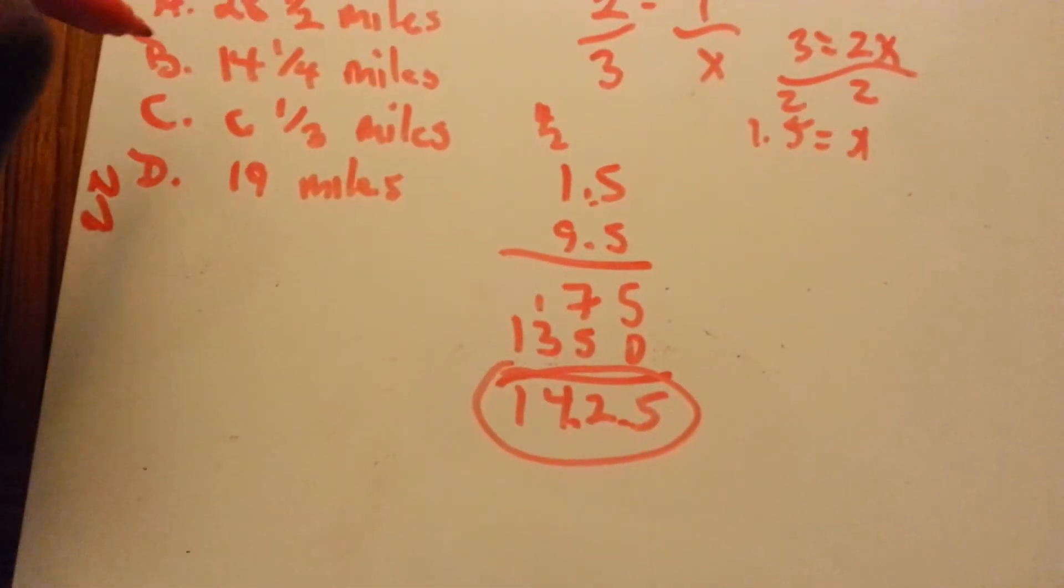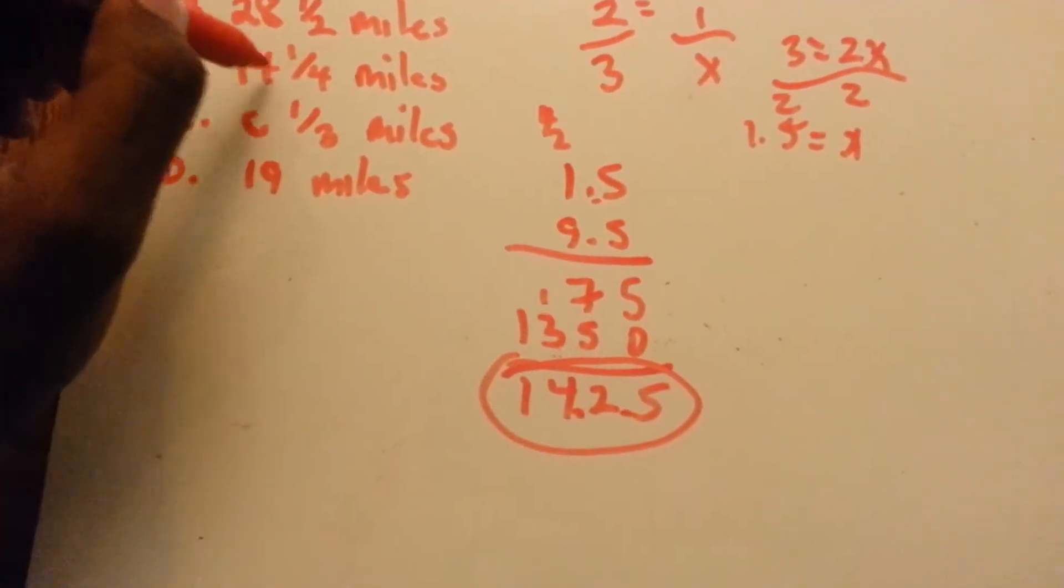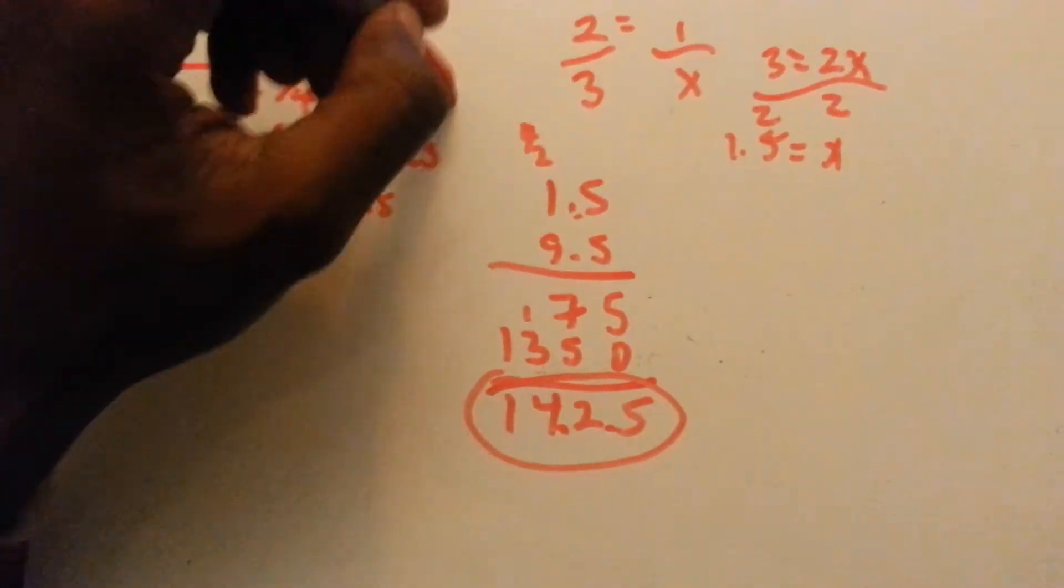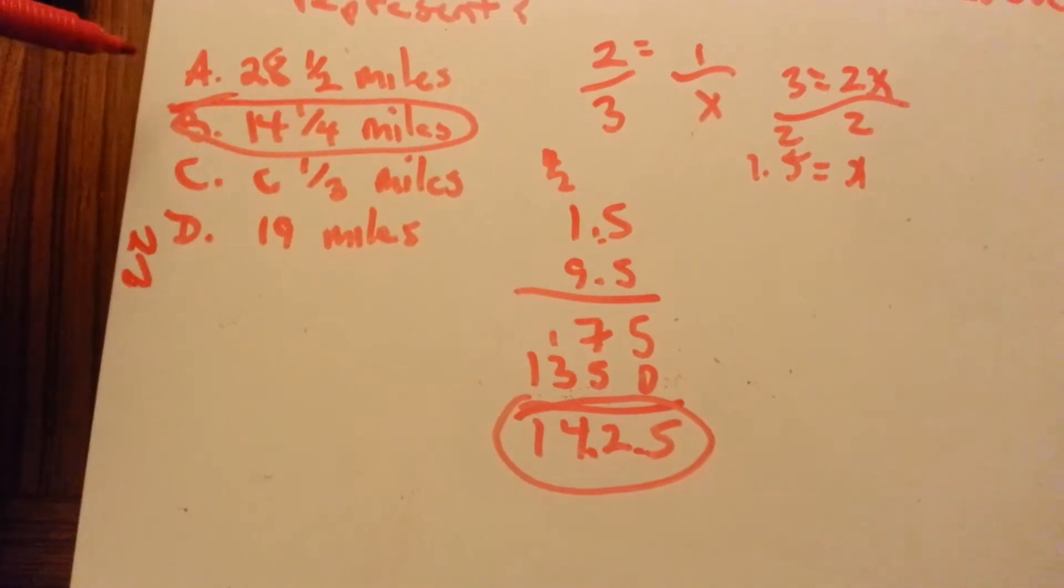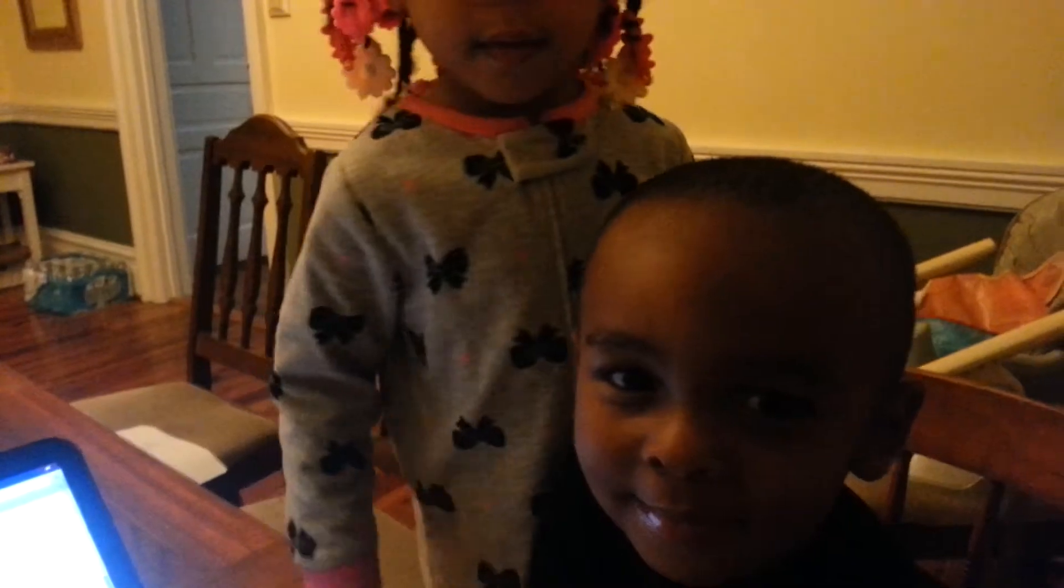answer B, 14 and a quarter. 0.25 is also 1 quarter, 14 and a quarter miles, answer B. Sorry, Nene, Namiah, and Nichelle, you guys are both wrong. Maybe next time.